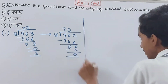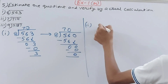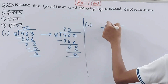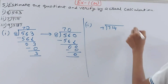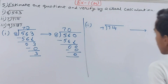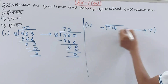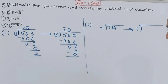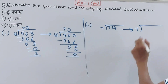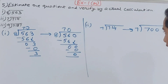Moving on to the second part: 714 ÷ 7. We will estimate this — rounding off to the nearest hundreds gives 700. So the estimated is 700 ÷ 7 and the actual is 714 ÷ 7.